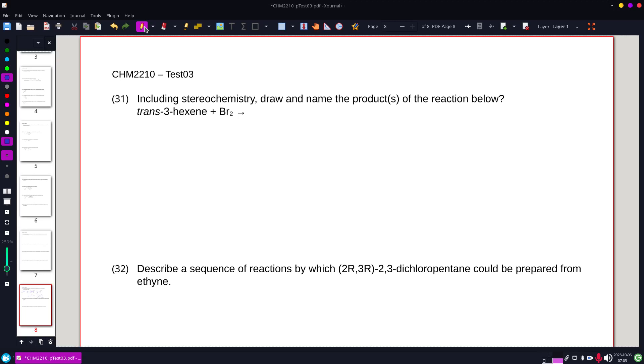All right, including stereochemistry, draw and name the product of the reaction below. I got trans-3-hexene and bromine.